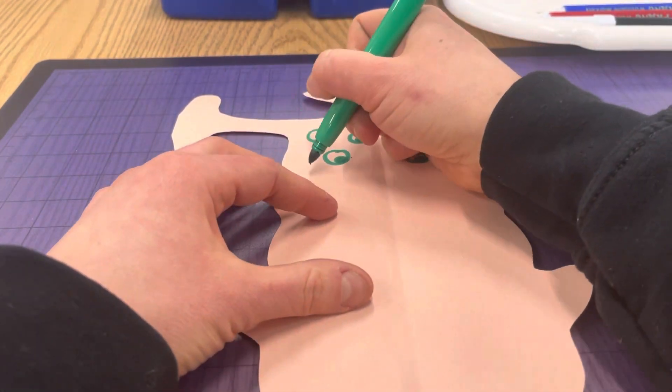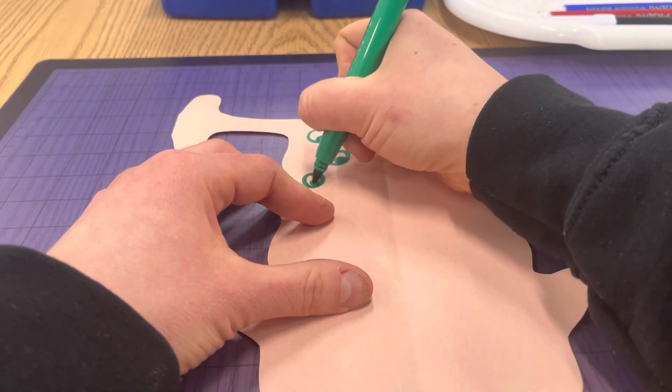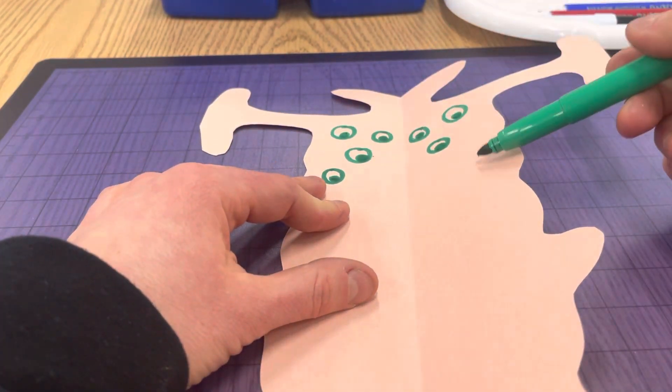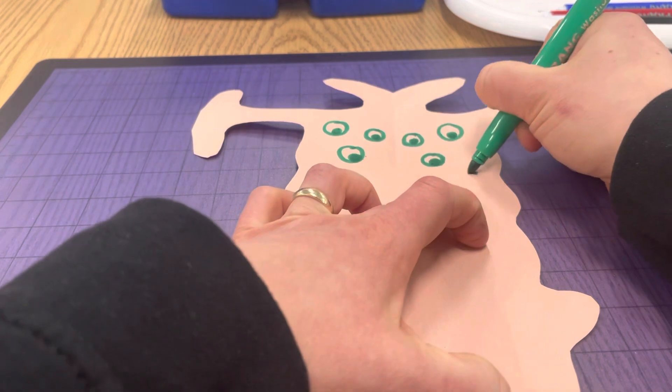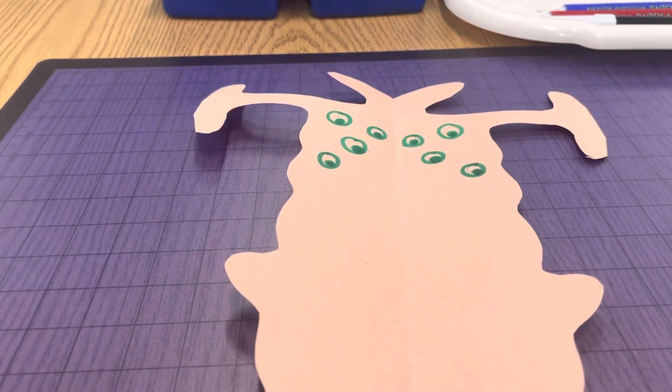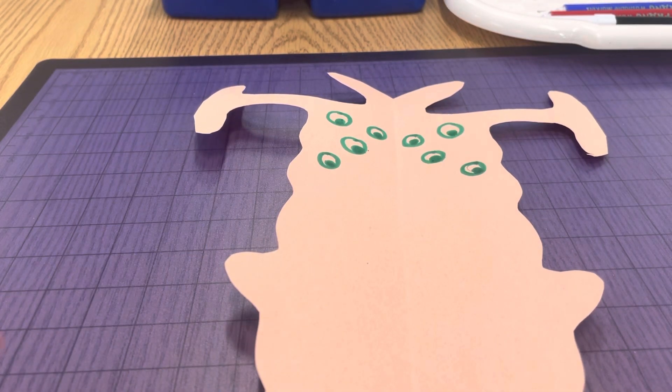If you make an oops, like let's say I drew one down here, that's okay. That means you just need to add one over here too. Okay. So if you have an oops and you need help figuring out how to fix it, let me know. I can help you.